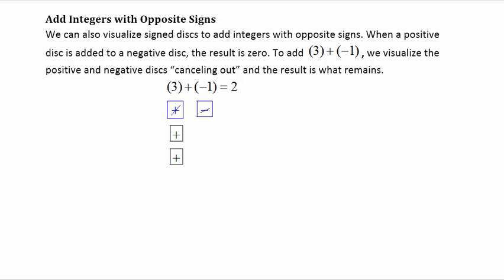Adding integers with opposite signs. We can also visualize signed disks to add integers with opposite signs. When a positive disk is added to a negative disk, the result is zero. So to add positive three plus negative one, we visualize the positive and negative disks canceling out, and the result is what remains. I have three positives and one negative — every time I combine a positive and a negative it gives me zero, so this pair zeroes out, leaving two positives. That's how I get an answer of positive two.